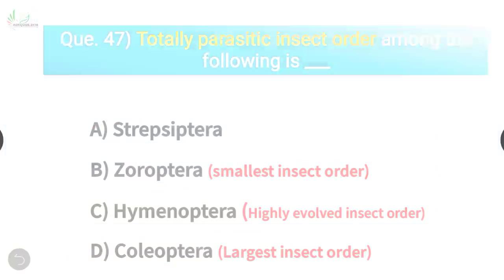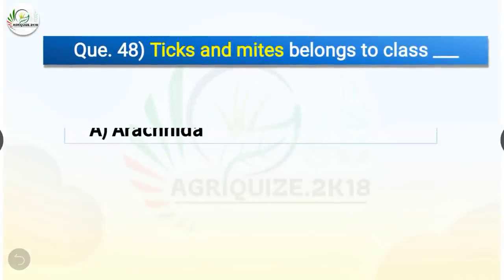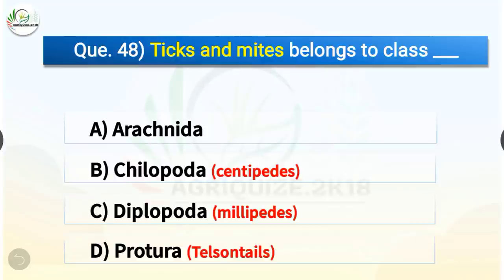Question number 48. Ticks and mites belong to which class? The options are Arachnida, Chilopoda, Diplopoda, or Protura. The correct answer is option A, Arachnida. Ticks and mites belong to the class Arachnida, whereas centipedes belong to Chilopoda, millipedes belong to Diplopoda, and telson tails belong to Protura.